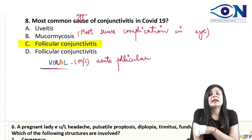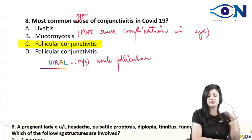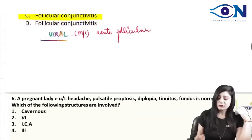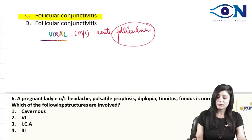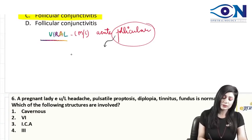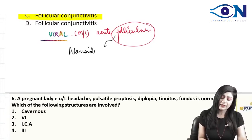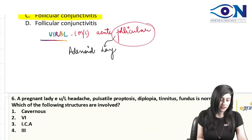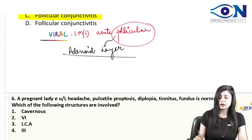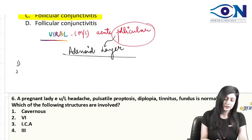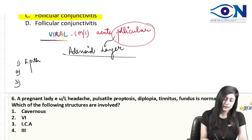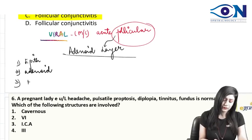If they ask the most common complication, the answer is acute follicular conjunctivitis. These follicles are present in the adenoid layer. Always remember: follicles are present in the adenoid layer. There are three layers in the conjunctiva — the epithelium, the adenoid layer, and the fibrous layer.